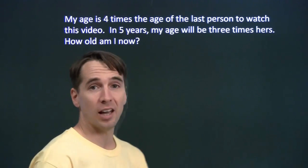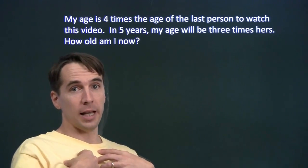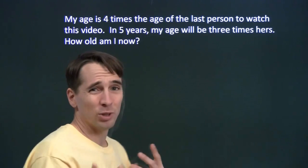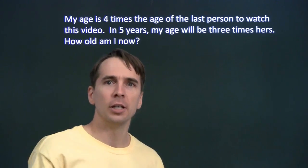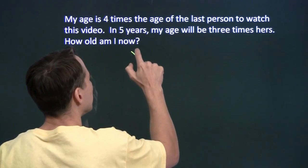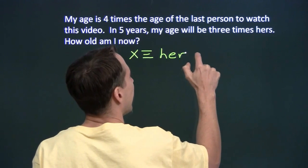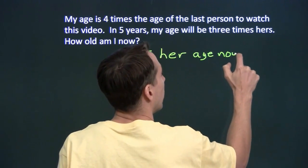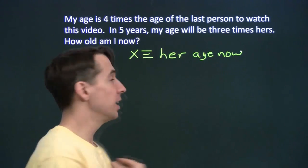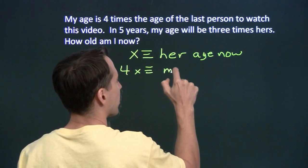You'll probably start by assigning a variable. Now, you might think, we'll assign a variable to how old I am now. Just let that be x. But then her age, I'm four times her age, so her age is going to be x over 4, and then you've got fractions. So instead, you might want to let the variable be her age now. So let x be her age now. Because by letting the variable be her age, then my age is just four times x, and we don't have any fractions.